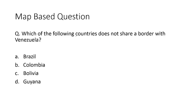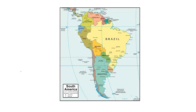Map-based question: Which of the following countries does not share a boundary with Venezuela? The correct answer is option C — Bolivia. As shown on the map, Brazil, Colombia, and Guyana are immediate neighbors of Venezuela, whereas Bolivia does not share a boundary with Venezuela.